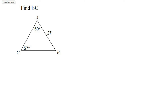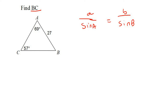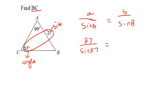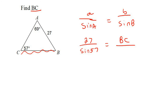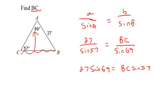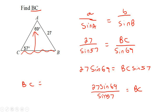Now we're going to start looking for sides. See how they want BC? So that's the whole side. Now we're not finding angles, but we still use the same formula. So we look for opposites — this is the side, this is the angle — so it's going to be 27 over sin 57. And then the next thing we're looking for is this side, BC, and its angle is 69. So use cross multiplication, and then to get BC by itself, you divide by sin 57. You end up with 30.06.